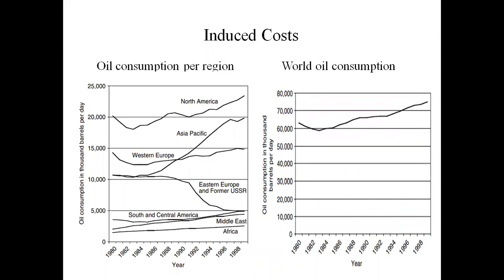The next two slides are related to fuel consumption by region. This shows worldwide oil consumption in thousands of barrels per day from 1980 to 1998, ranging from zero to 25,000. North America consumes around 20,000 barrels per day. West European countries consume nearly 12,000 to 15,000 barrels per day. From 1980 to 1988, consumption was increasing every year. Asian Pacific countries increased from 10,000 to 20,000.